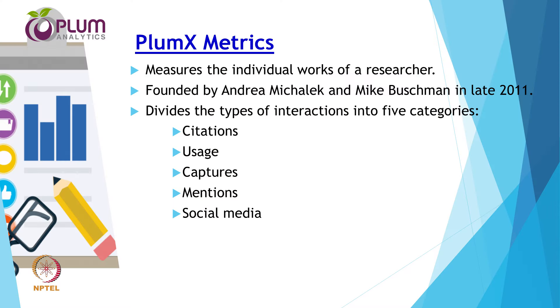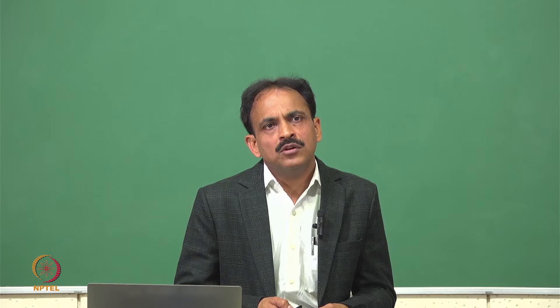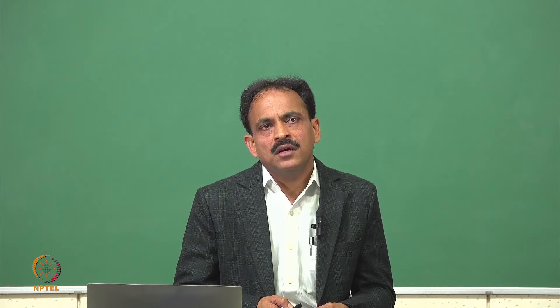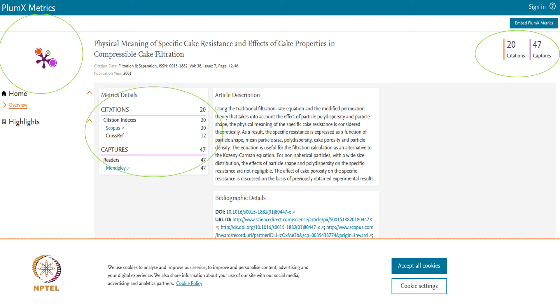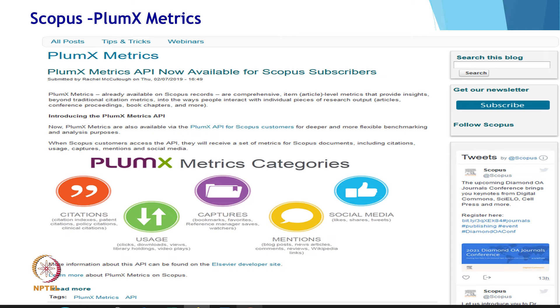Plumex Metrics measures the individual works of a research scholar. It was founded by Andrew Mitchell and Mike Boseman in late 2011, and is a tool to harvest metrics from various online sources as an impact dashboard for measuring research output. Plumex provides both altmetric and traditional metrics, dividing types of interaction into five categories: citations, usage, captures, mentions, and social media. It is integrated into Elsevier products like Scopus, ScienceDirect, SciVal, and Pure, and is a subscription-based product. In all Elsevier products you will find the Plumex Metrics sign, giving complete data on those five components.